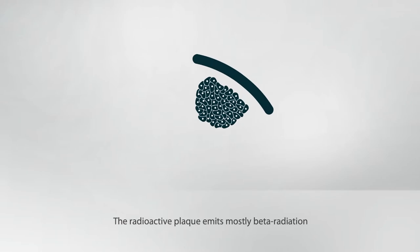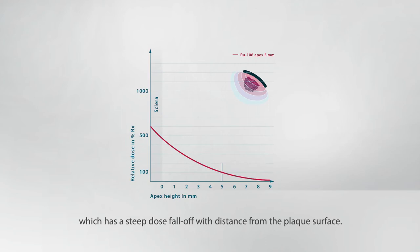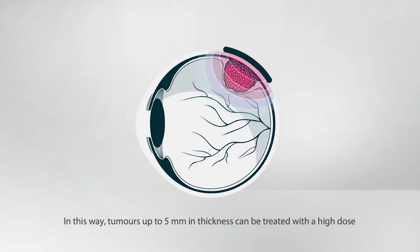The radioactive plaque emits mostly beta radiation which has a steep dose fall off with distance from the plaque's surface. In this way, tumors up to 5 mm in thickness can be treated with a high dose while sparing sensitive structures such as the optic nerve and fovea.